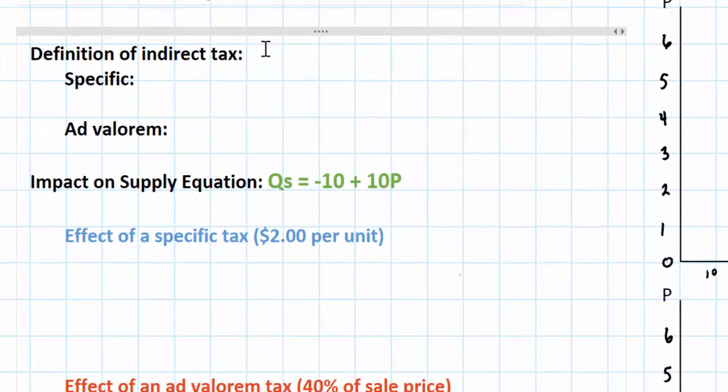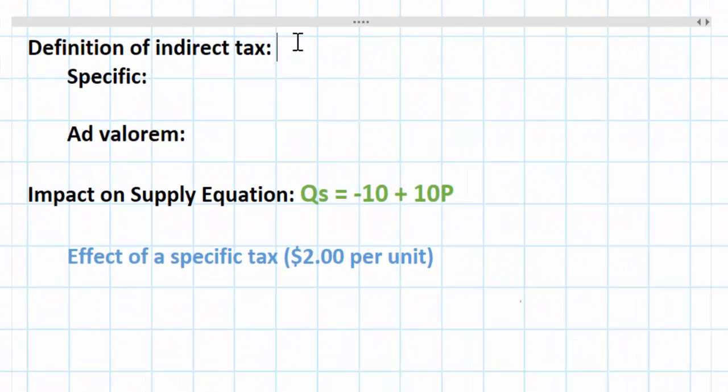Let's start with the definition of an indirect tax. Generally speaking there are two types of taxes that a government can levy on the people of its country. There is a direct tax, which is a tax on income, and there is an indirect tax, which is a tax on either production or consumption of goods.